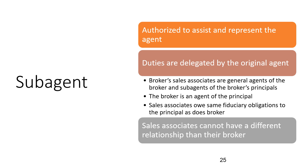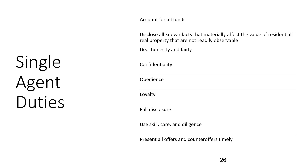A sub-agent is authorized to assist and represent the agent, with duties delegated by the original agent. Broker sales associates are general agents of the broker and sub-agents of the broker's principal. The broker is an agent of the principal, and sales associates owe the same fiduciary obligations to the principal as does the broker. Sales associates cannot have a different relationship than their broker. Single agent duties include: account for all funds, disclose all known facts that materially affect the value of residential property that are not readily observable, deal honestly and fairly, confidentiality, obedience, loyalty, full disclosure, use skill, care, and diligence, and present all offers and counteroffers in a timely manner.